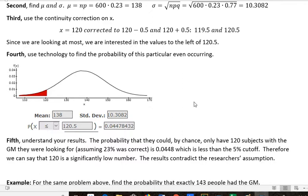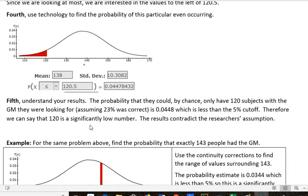So now that I have that, I have to then understand my results. This is saying the probability that we could, by chance, have 120 subjects with the genetic marker that we're looking for, assuming that the 23% was correct, is 0.0448. And that is about 4.5%, right? Which is less than the 5% cutoff. Therefore, we can say that 120 is a significantly low number. We would not expect to get that by chance. It's very rare that that would happen. So when you're looking at this, you say, well, is this something that could happen by chance? Not usually. Not to say it never could happen, but it would be very rare. And so what that tends to do is contradict the researcher's assumption that it should happen 23% of the time. Maybe that assumption was incorrect to begin with. Okay, that's that one.